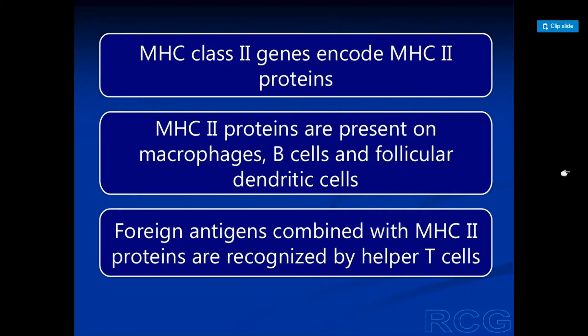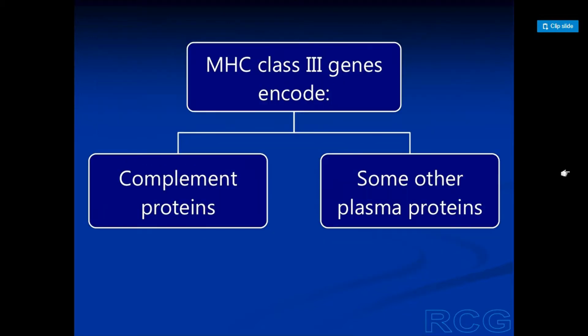The MHC class 2 genes encode the MHC class 2 proteins, which are present on macrophages, B-cells, and follicular dendritic cells. Foreign antigens combined with MHC class 2 proteins are recognized by the helper T-cells. The MHC class 3 genes encode the complement proteins and some other plasma proteins.